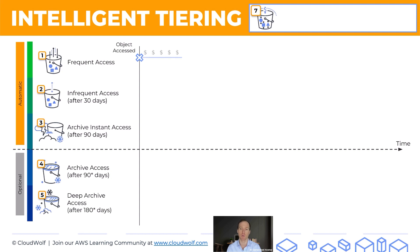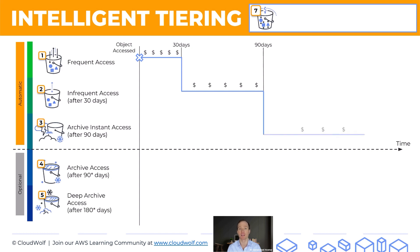At first the object will stay in frequent access, where it will incur a certain cost for storage. If this object is not accessed for 30 days, it will be dropped down to infrequent access, where it will incur a lower charge for storage. If the object is not accessed for a total of 90 days, it will be dropped even further into archive instant access, where it will stay indefinitely at an even lower cost. Once the object is accessed, it instantly jumps back up to frequent access and the cycle repeats.